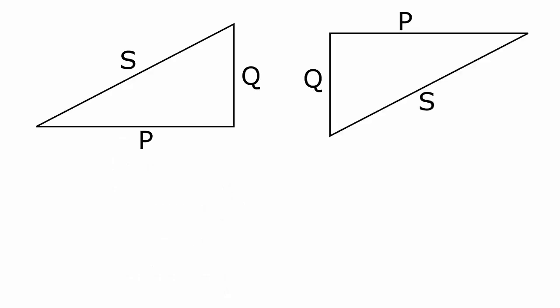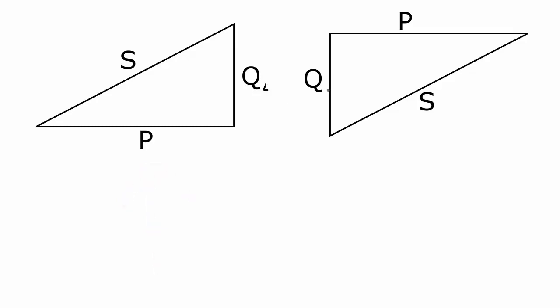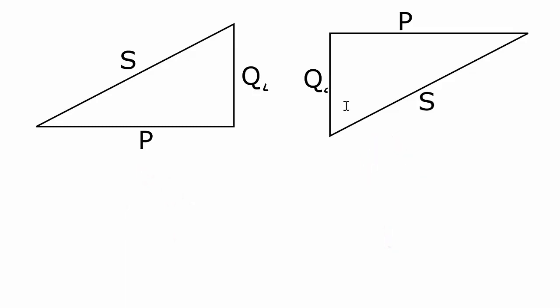Back to this power triangle, which can be represented two ways. The difference is: one power triangle represents a reactive power that's inductive, while the other represents a reactive power that is capacitive. To understand where this power triangle comes from, let's take a look at a simple example.